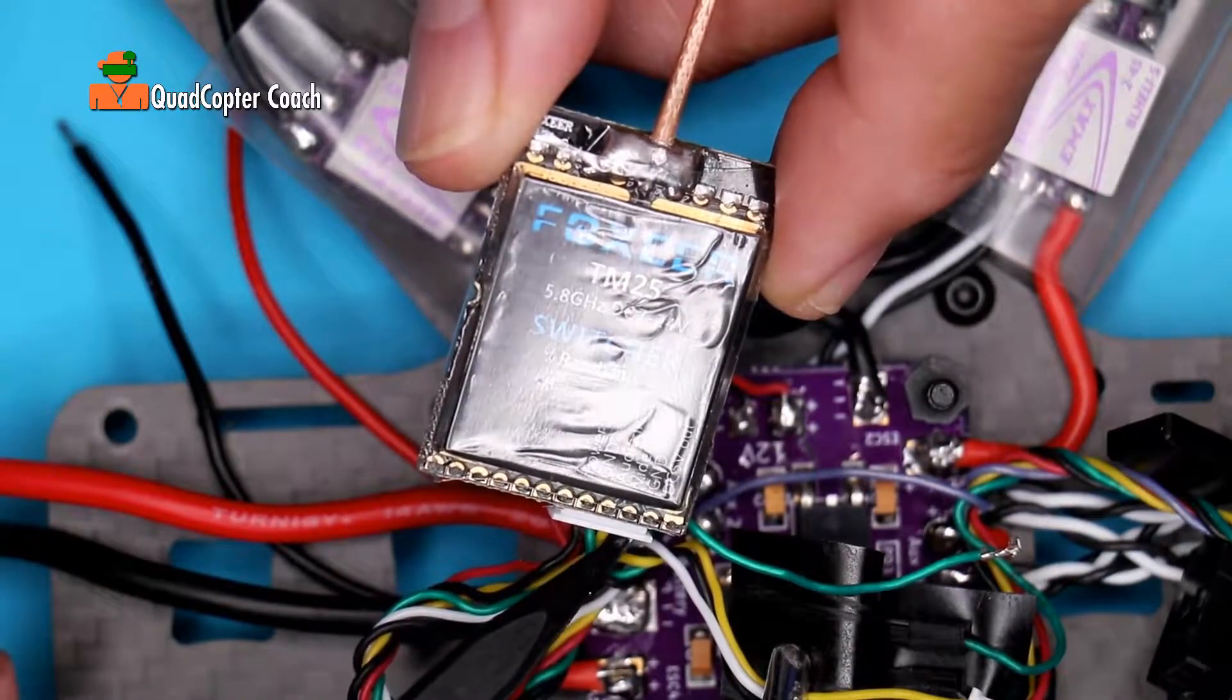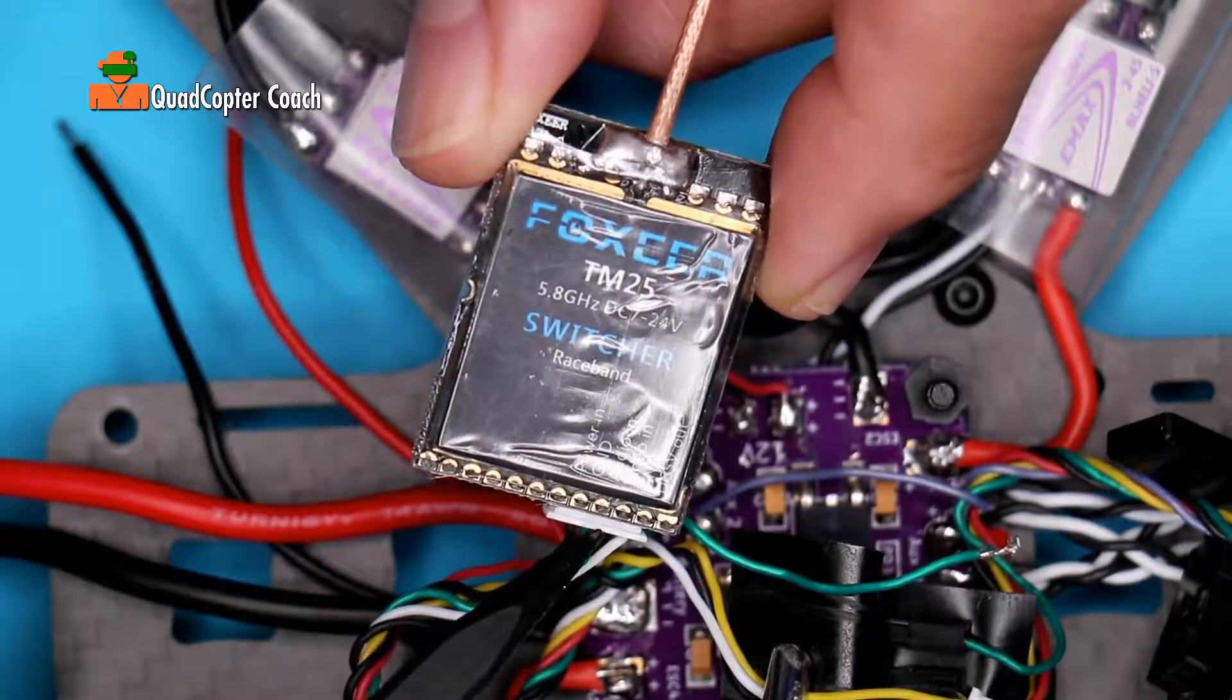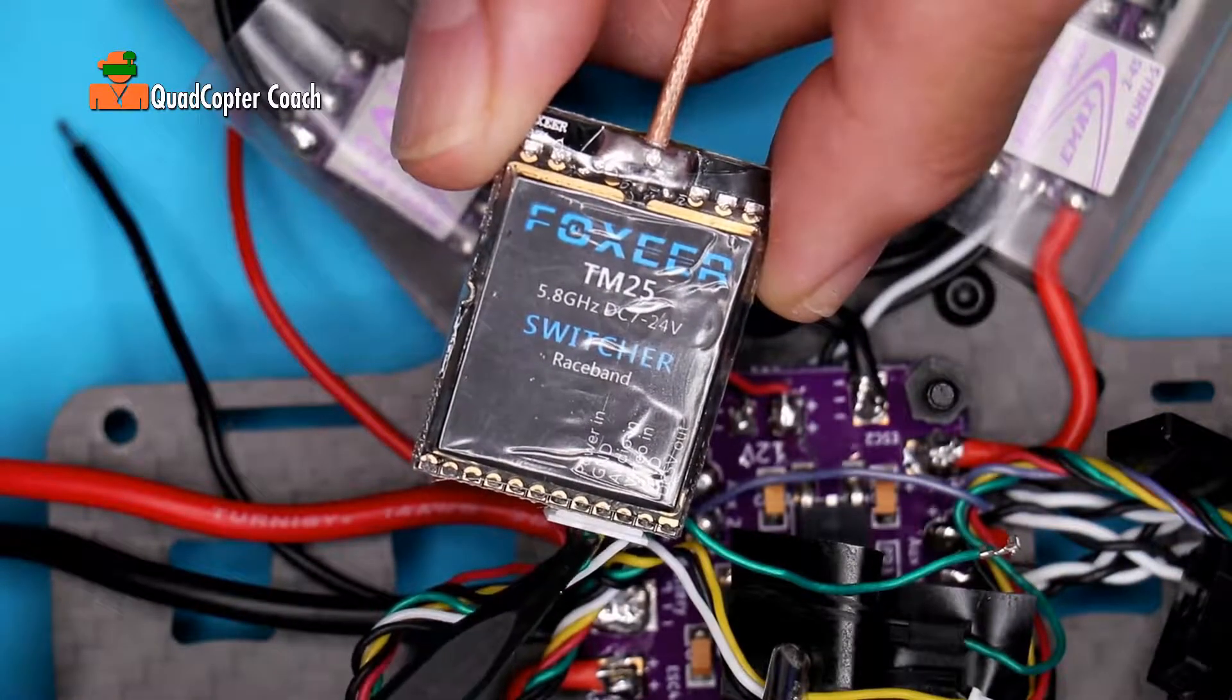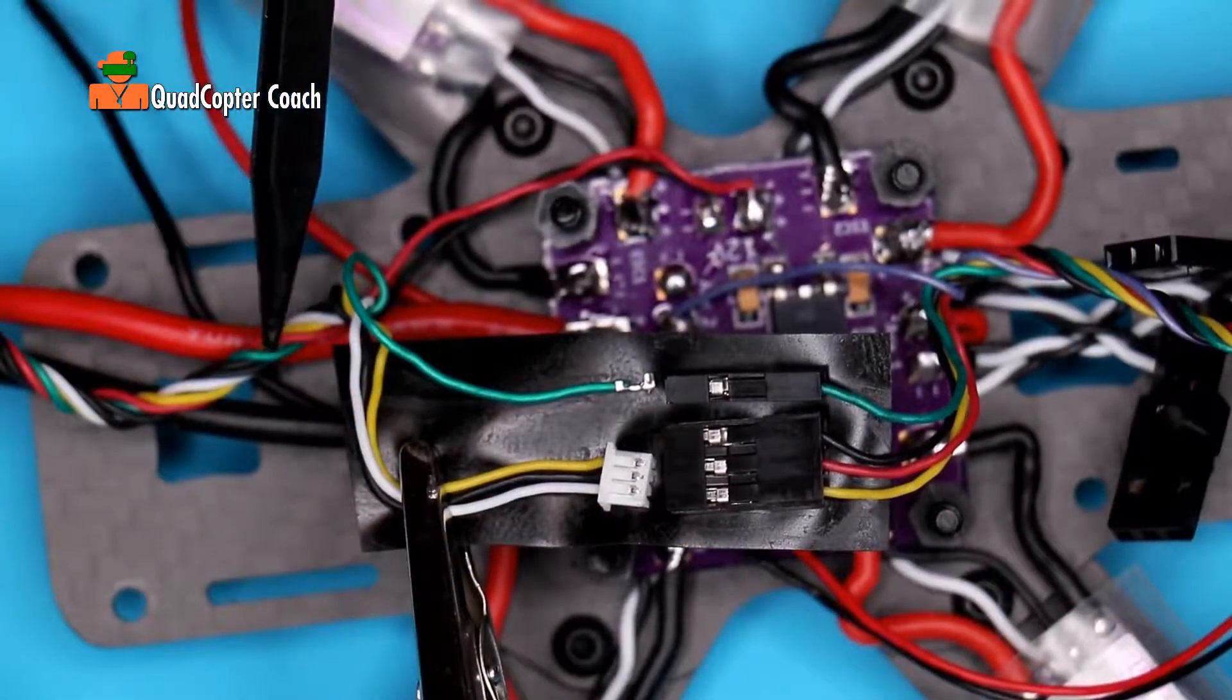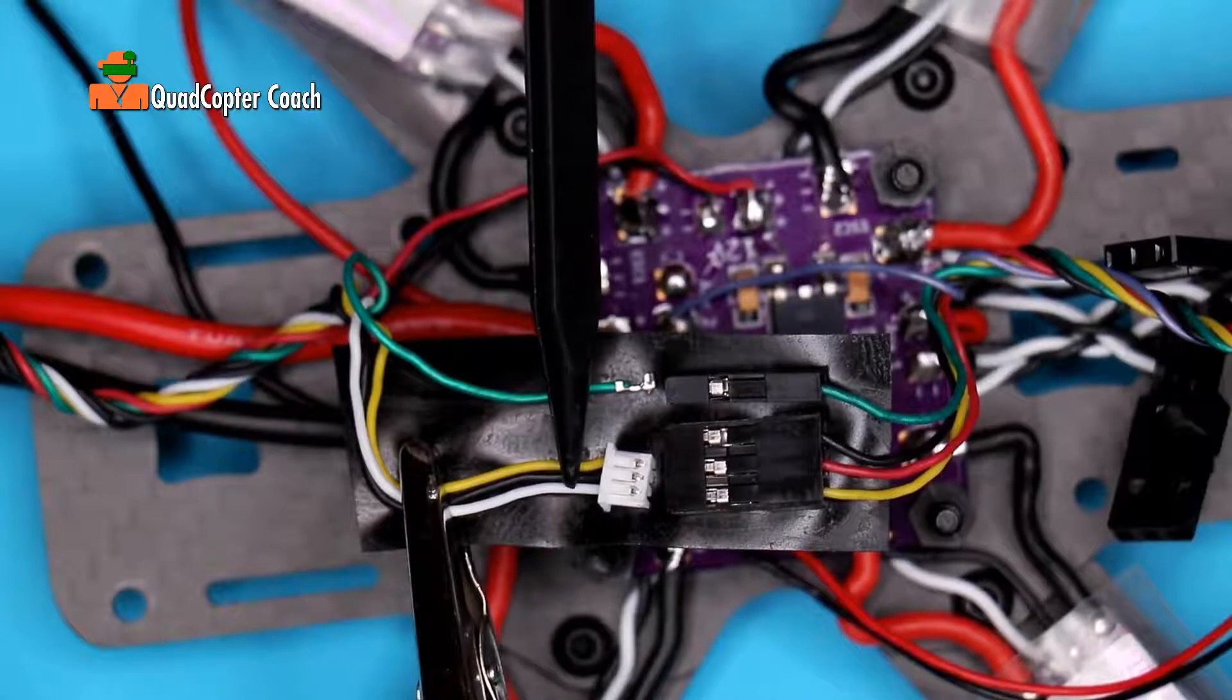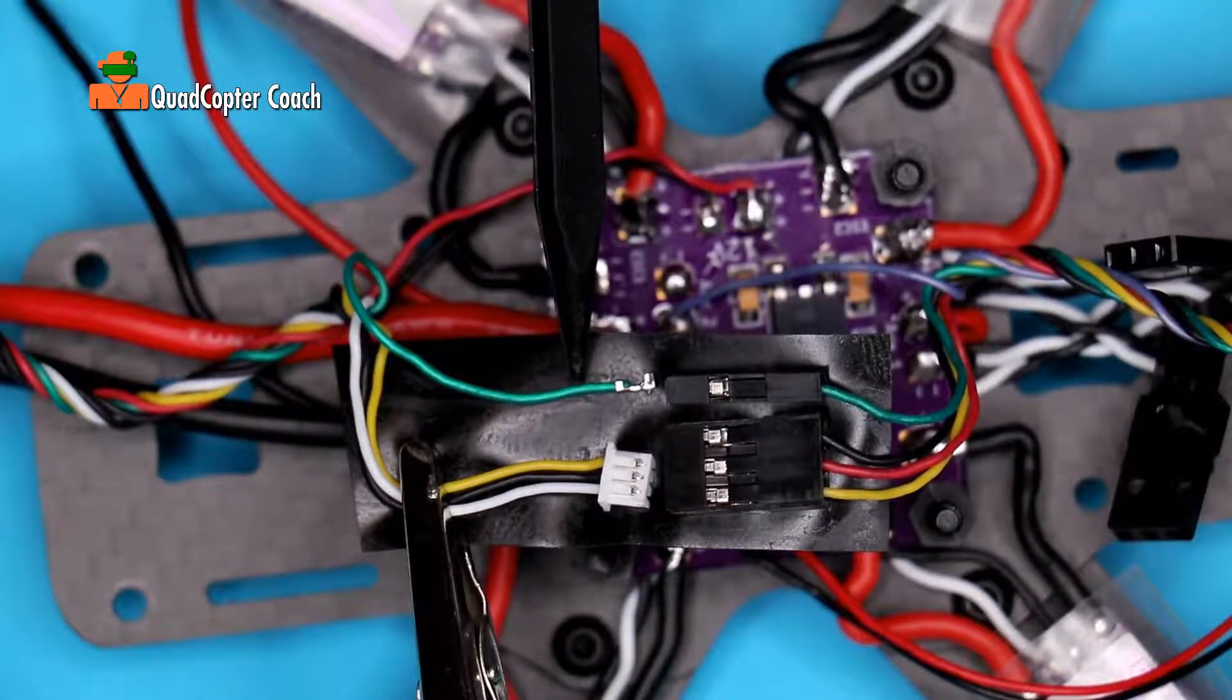The 5 volt power out is the white wire, the ground is the black wire, the video is the yellow wire and the audio is the green wire. Following the wires from the video transmitter we'll have the 5 volt wire, the ground wire, the video wire and the audio wire.